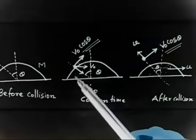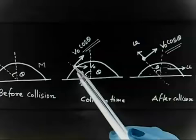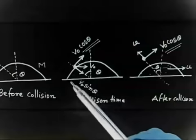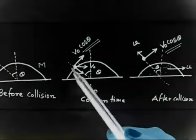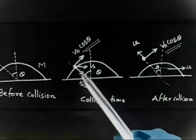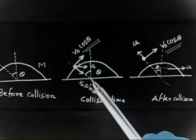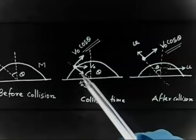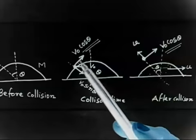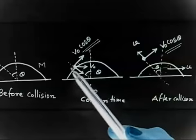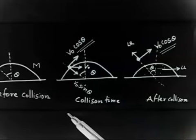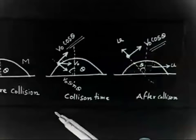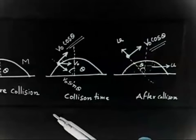Just before the collision, this mass has a velocity broken into radial and tangential directions. The radial velocity is v naught sin theta, and the tangential velocity is v naught cos theta.